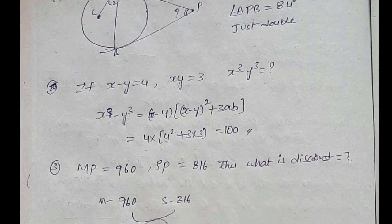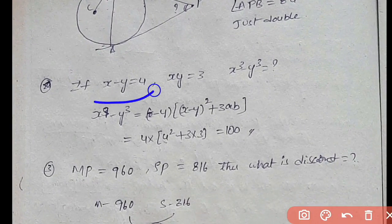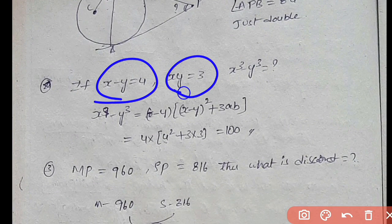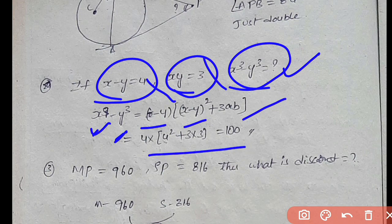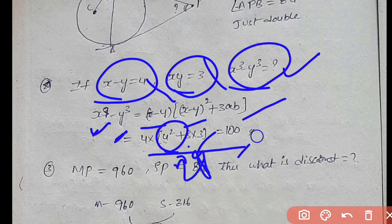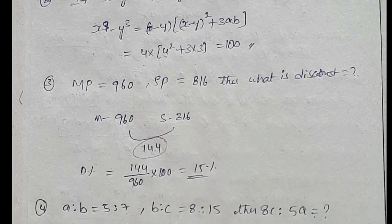Next we have to do Algebra. The question is x minus y and xy are given, find x³ minus y³. Very easy — just substitute into the formula: (x−y)³ = (x−y)² + 3ab. x−y = value, so 4² = 16, plus 3×3 = 9, so 25×... the answer is 100.